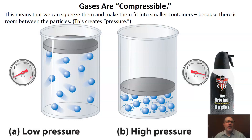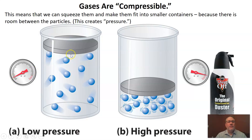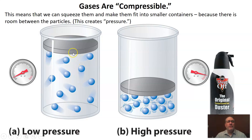Gases are what we call compressible, which means they can be pressed closer together. For example, if we take this cylinder with a gas inside and a piston — a little cover at the top — that we can push down, and we can see a pressure gauge. If we start pressing down on this piston, these gas particles are going to be forced closer and closer together. We can't do that with solids and liquids because their particles are already very close together, but with gases we can absolutely force the particles closer.